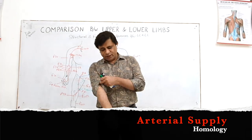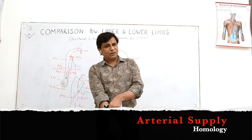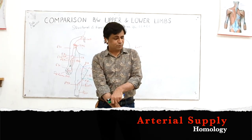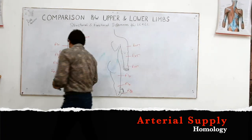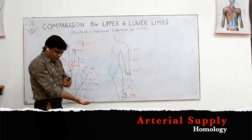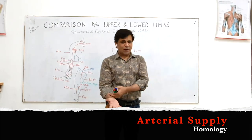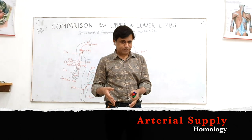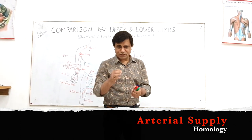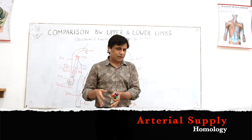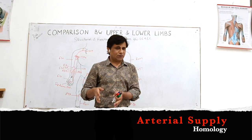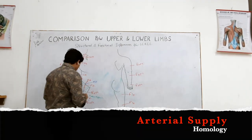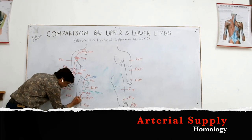In the back of the forearm, the posterior interosseous artery supplied only the upper third; the anterior interosseous perforated to reinforce the lower third. Similarly here: the posterior tibial artery in the back of the leg is not sufficient alone to supply the entire back of the leg. So the posterior tibial artery gives its largest branch — the peroneal (fibular) artery.